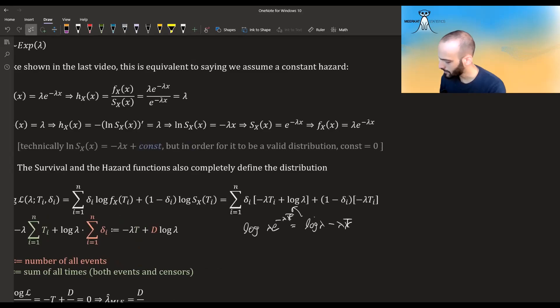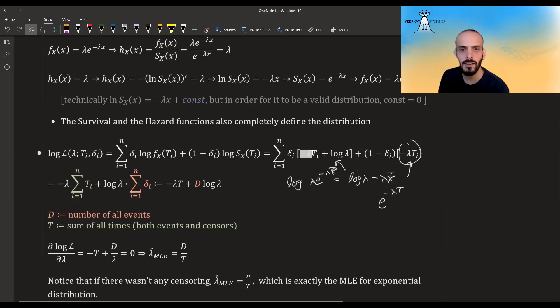The same for the survival function - the survival function is just e^(-lambda*t), and if we take the log of it we get this. Bringing all of this we see that this is here and also here, and here we get all the events and here we get all the non-events, so together we just have it for everything. The minus lambda can go outside and then it's just the sum of the times for everything, both events and non-events.